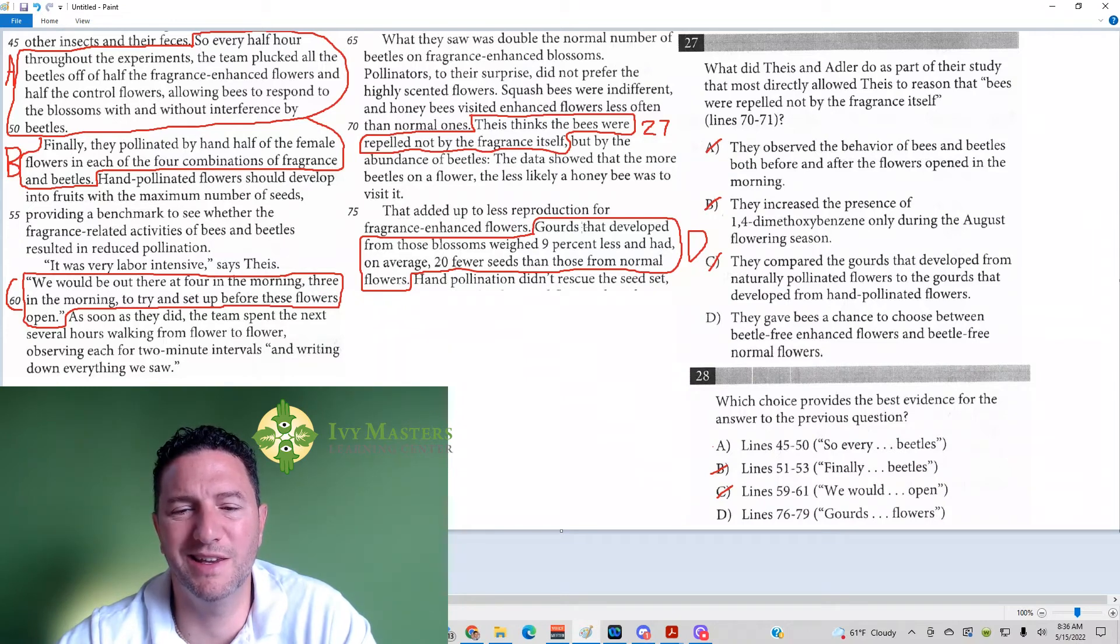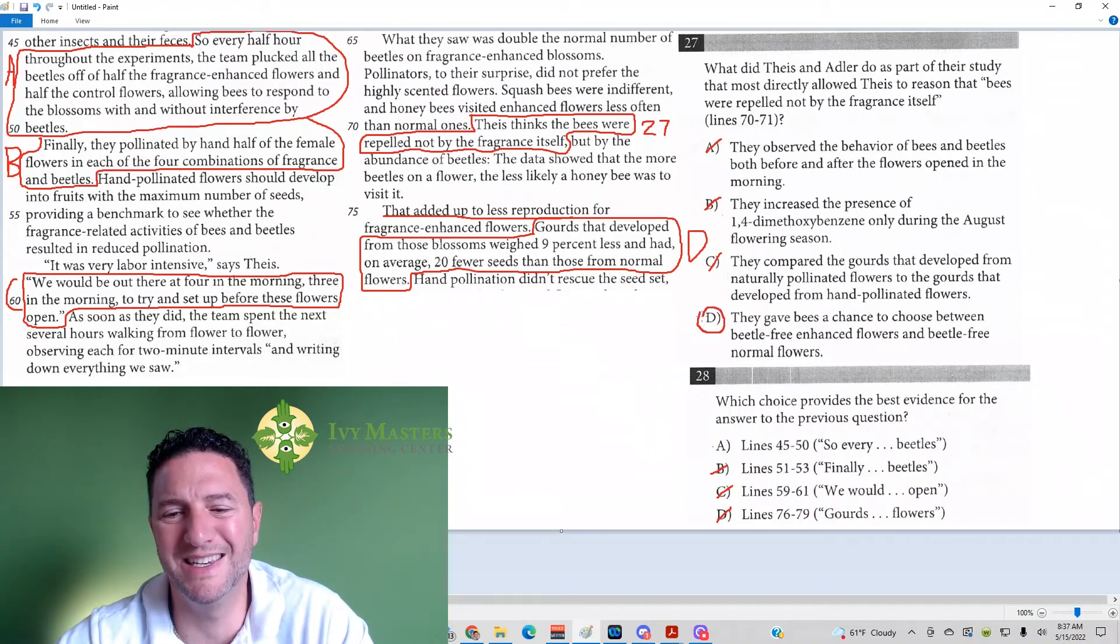That's just talking about, and to get context and understand what the answer choice is saying a little bit better, you can read before and after. First sentence, that added up to less reproduction for the fragrance-enhanced flowers. It's talking about reproduction, not whether they're attracted or repelled. So, the correct answer here is going to be D for number 27, along with A for number 28.